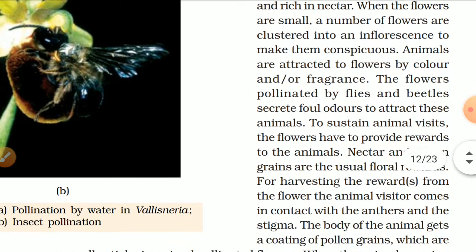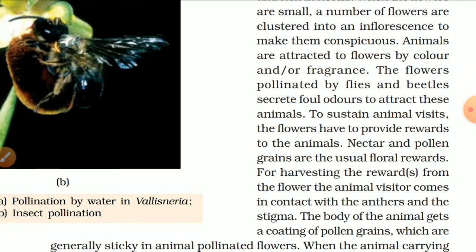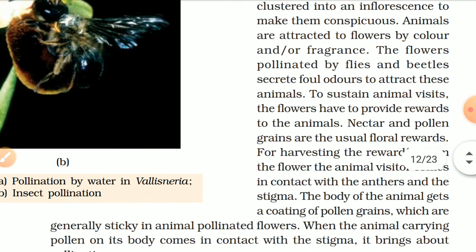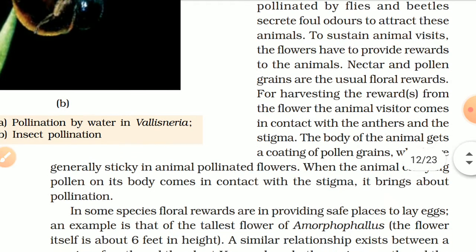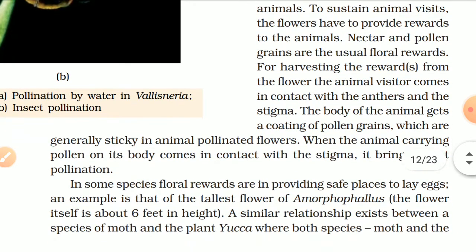To sustain animal visits, the flowers have to provide rewards to the animals. Nectar and pollen grains are the usual floral rewards. For harvesting the rewards from the flower, the animal visitor comes in contact with the anther and the stigma. The body of the animal gets a coating of pollen grains, which are generally sticky in animal-pollinated flowers. When the animals carrying pollen on their body come in contact with the stigma, it brings about pollination.